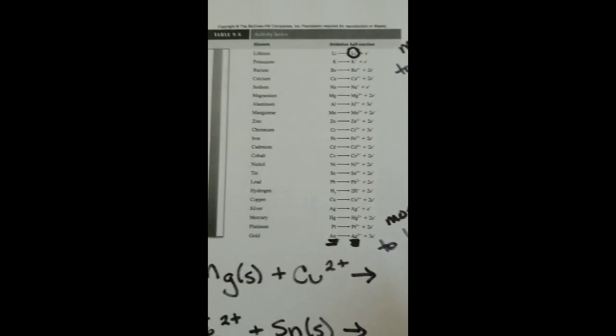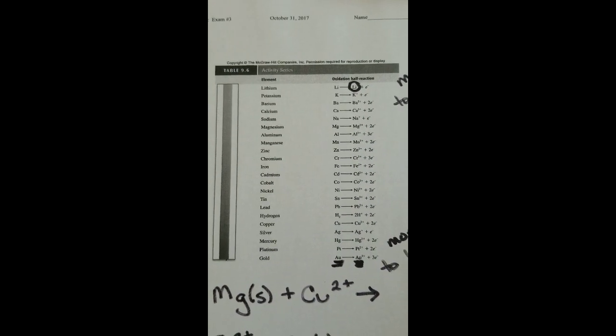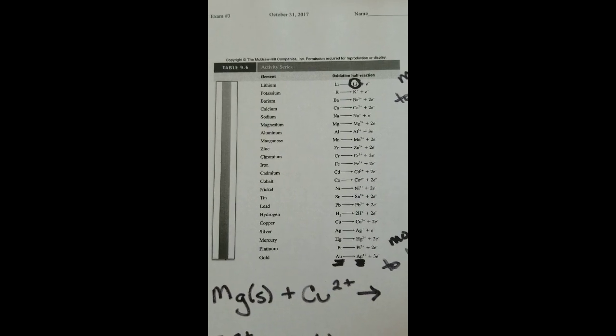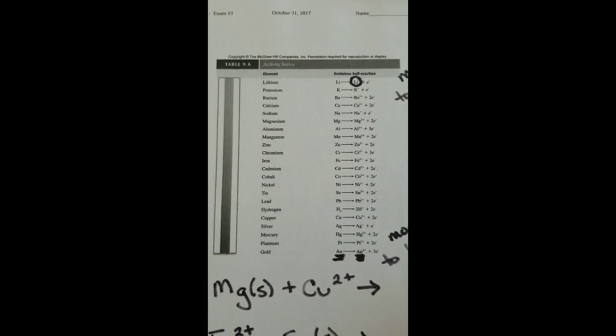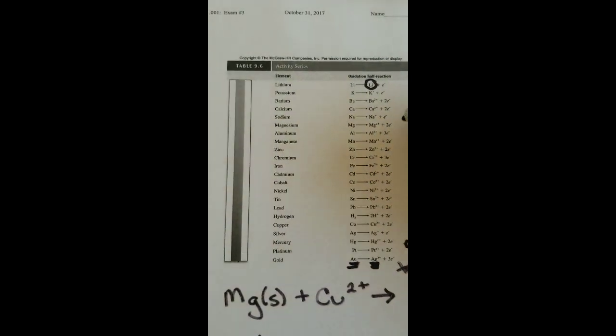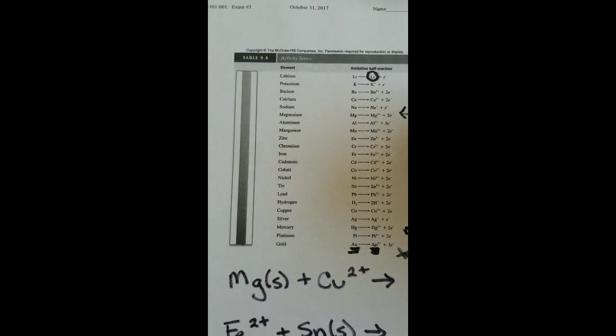So let's actually look at some of these options and what they look like. So down here at the bottom, we have magnesium plus copper ions, and we want to know if anything is going to happen. So what we're going to do is we're going to find both of these on our table. So I'm looking for magnesium and copper. So as I look for this, I should find magnesium. There's my magnesium. And I'm going to find copper. There we go. Copper down here.